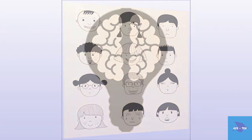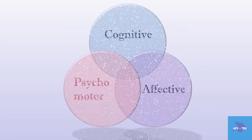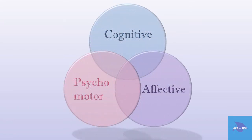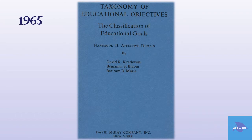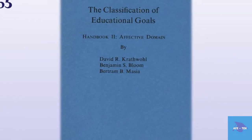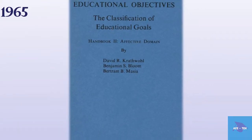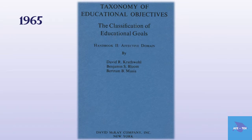The affective domain was one of the three systems published in 1956 for identifying, understanding and addressing how people learn. A detailed study of the affective domain was published in 1965 in Taxonomy of Educational Objectives, Book 2, Affective Domain by Krathwohl, Bloom and others. Krathwohl is attributed as the primary author of this book.